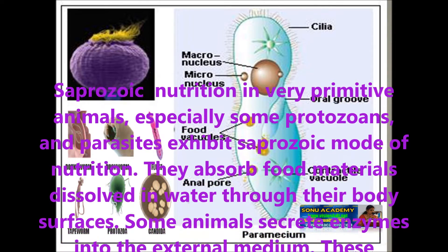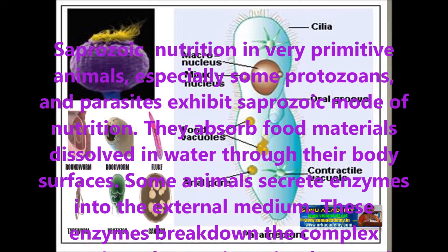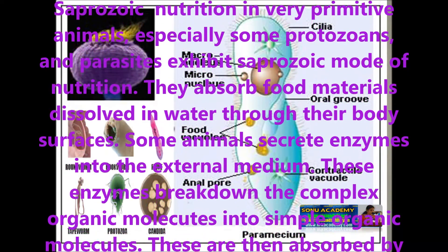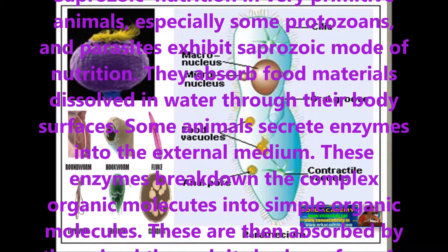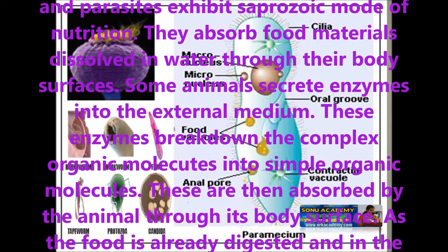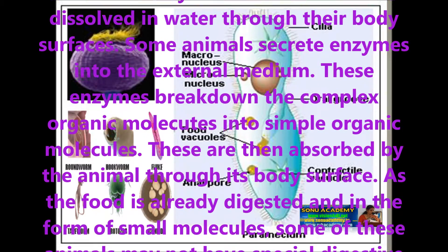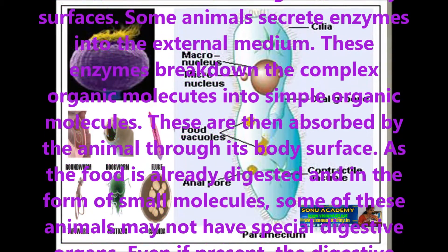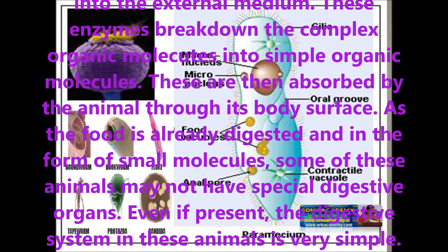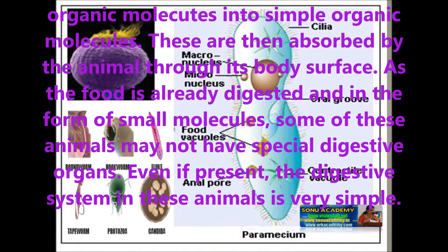This type of nutrition involves absorbing food materials dissolved in water through their body surfaces. Some animals secrete enzymes into the external medium, which break down complex organic molecules into simple organic molecules, which are then absorbed through the body surface.